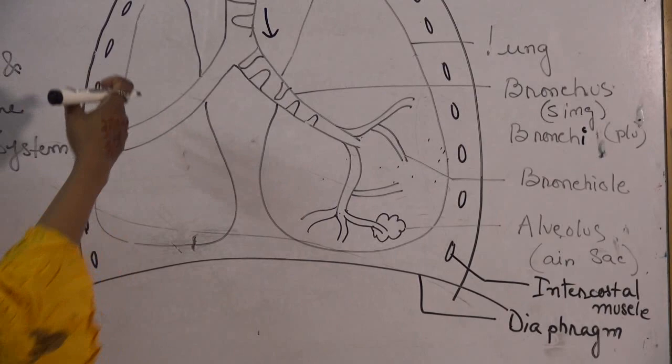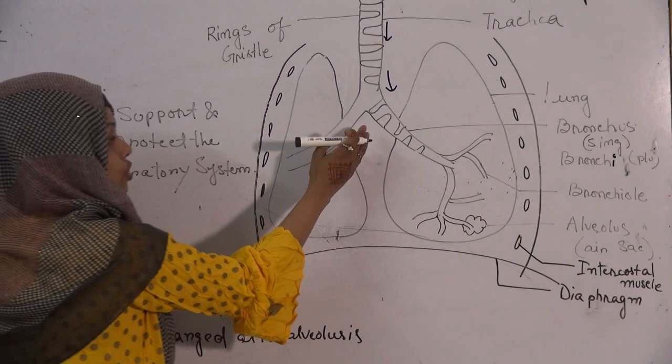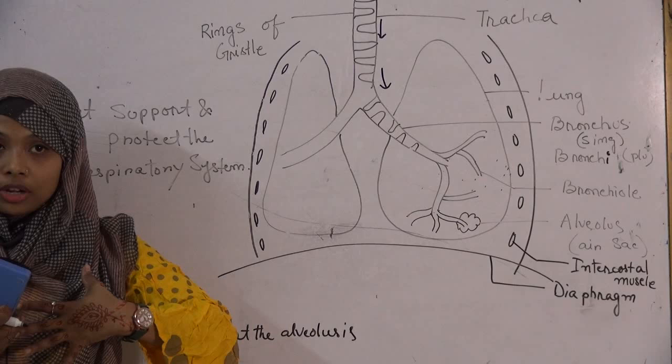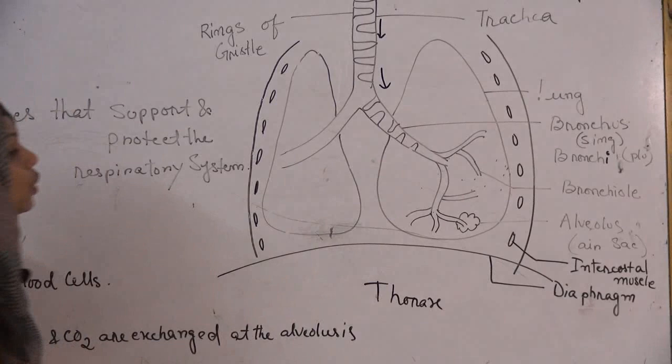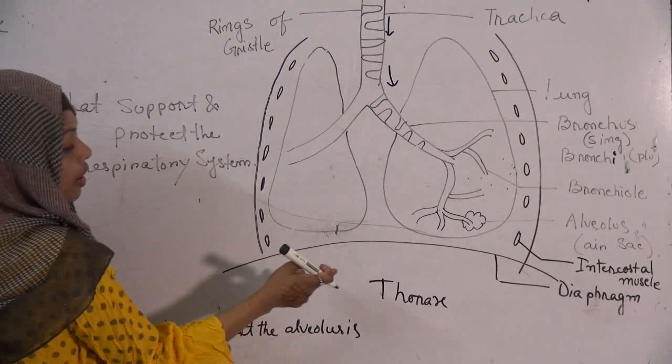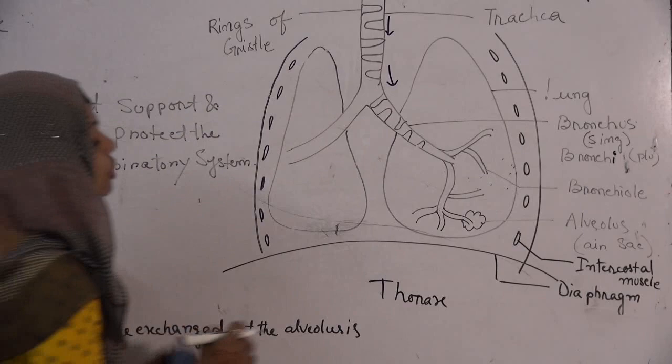Now let's look at the other structures protecting the respiratory system. Somewhere at the center you have the heart located, but we are not concerned with the cardiac or circulatory cycle here. The respiratory system — meaning the lungs — is contained in the upper part of your body known as the thorax. Our body is divided into two parts by the diaphragm: the upper half is known as the thorax, while the lower half is known as the abdomen.